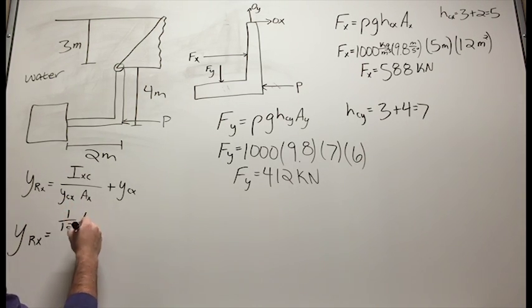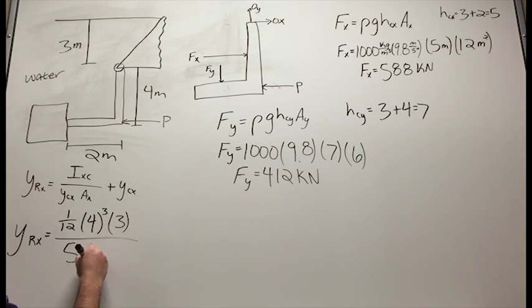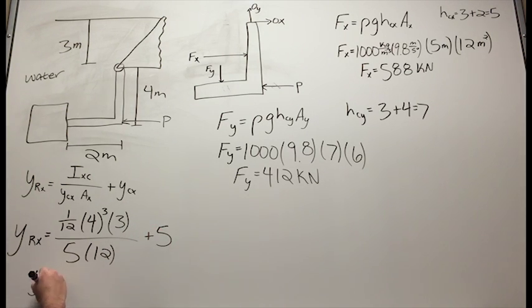I_xC ends up being 16 meters to the fourth. Y_cX is 5 meters, and A_X is 12 meters squared. After plugging these values in, we get that Y_RX equals 5.267 meters.